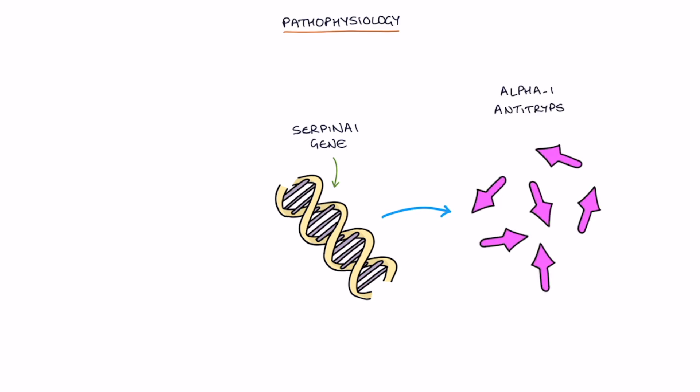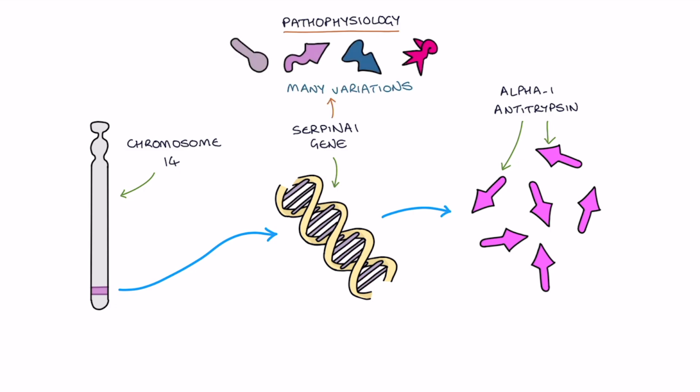So let's go through the pathophysiology. The Serpin-A1 gene coding for alpha-1 antitrypsin is found on chromosome 14. The gene has many potential variations, each with different effects on the quantity and functionality of alpha-1 antitrypsin.